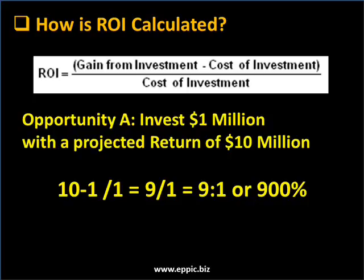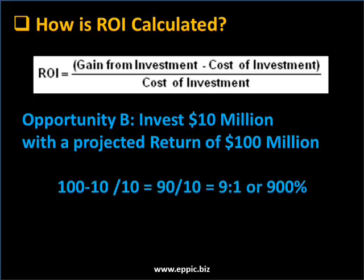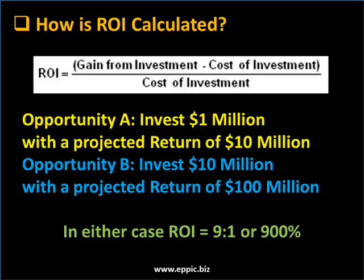Let's look at another opportunity. Opportunity B: we're going to up the stakes here. We're going to invest $10 million with a projected return of $100 million. 100 minus 10 divided by 10 equals 90 over 10, or 9 to 1, or 900%. That's the same thing as the first example. In either case, ROI is 9 to 1, or 900%.